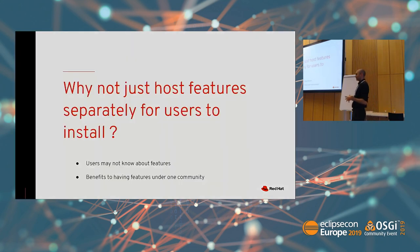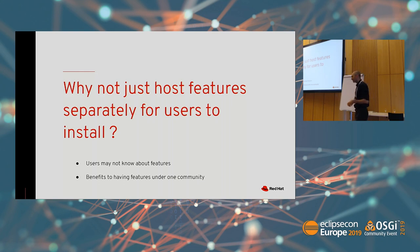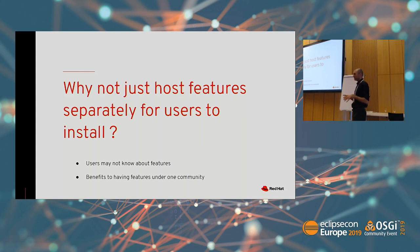Before I get into more features, I want to address a question some people may have: why even bother? We have the Eclipse Marketplace, we have different plugins and capabilities shipping separately, so why not just use them? Why go through this exercise of trying to merge everything? The reason is simply: if you have some language-specific feature like JDT, and then peripheral additions like code recommenders or postfix completion, generally users aren't going to say 'I need to go find it.' They're just going to assume it doesn't exist.